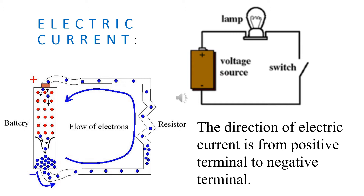In the second diagram, the positive sides are indicated by protons shown in red, and the negative sides are indicated by electrons shown in blue. This flow of electrons constitutes an electric current, but the direction of electric current is always taken from the positive terminal of the battery to the negative terminal. The rate of flow of charge constitutes electric current.